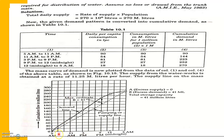Now you need to plot a graph of time versus cumulative flow. On the graph: at 11 am the cumulative demand is 90, which is marked; at 3 pm it is 144, lying between 140 and 160 on the axis; at 9 pm it is 252, which is marked; and at the end it is 270, also marked.